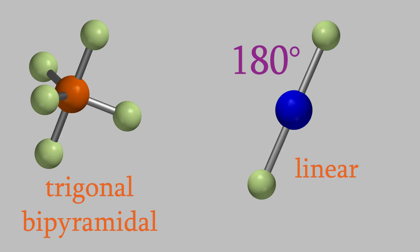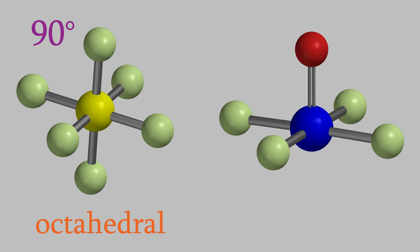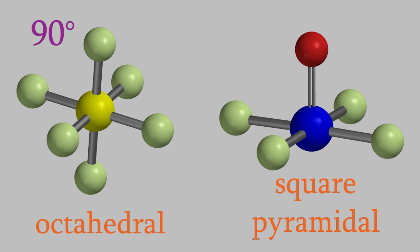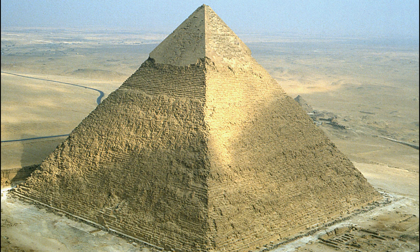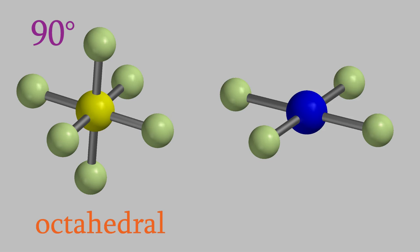The last shape we learned about in the previous video is the octahedral shape, in which there are six bonds and no electron pairs on the central atom, and all the bond angles are 90 degrees. If you look at xenon oxytetrafluoride, you'll see that this molecule only has five bonds, but there's also an electron pair on the central atom, so the bond angles are still 90 degrees. But since we can't see the electron pair, the shape isn't octahedral — instead, it's called square pyramidal, because it's shaped like a pyramid with a square base. Finally, in the molecule xenon tetrafluoride, there are four bonds and two electron pairs. The electron pairs are on opposite sides of the molecule, so the four bonds make a kind of plus-sign shape, and we say that this is a square planar molecule.